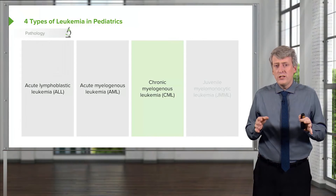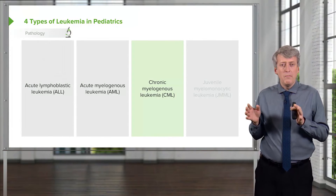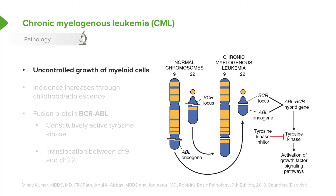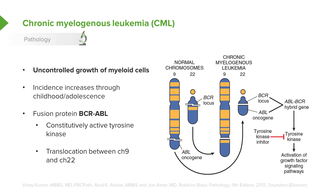Switching gears to chronic disease — chronic myelogenous leukemia, or CML, is less common in kids. This is an uncontrolled growth of myeloid cells, and the incidence increases through childhood and adolescence. Often these patients have a fusion protein, the BCR-ABL gene, which constitutively activates tyrosine kinase. The mutation involves a translocation between chromosome 9 and chromosome 22, causing a continuously activated tyrosine kinase.